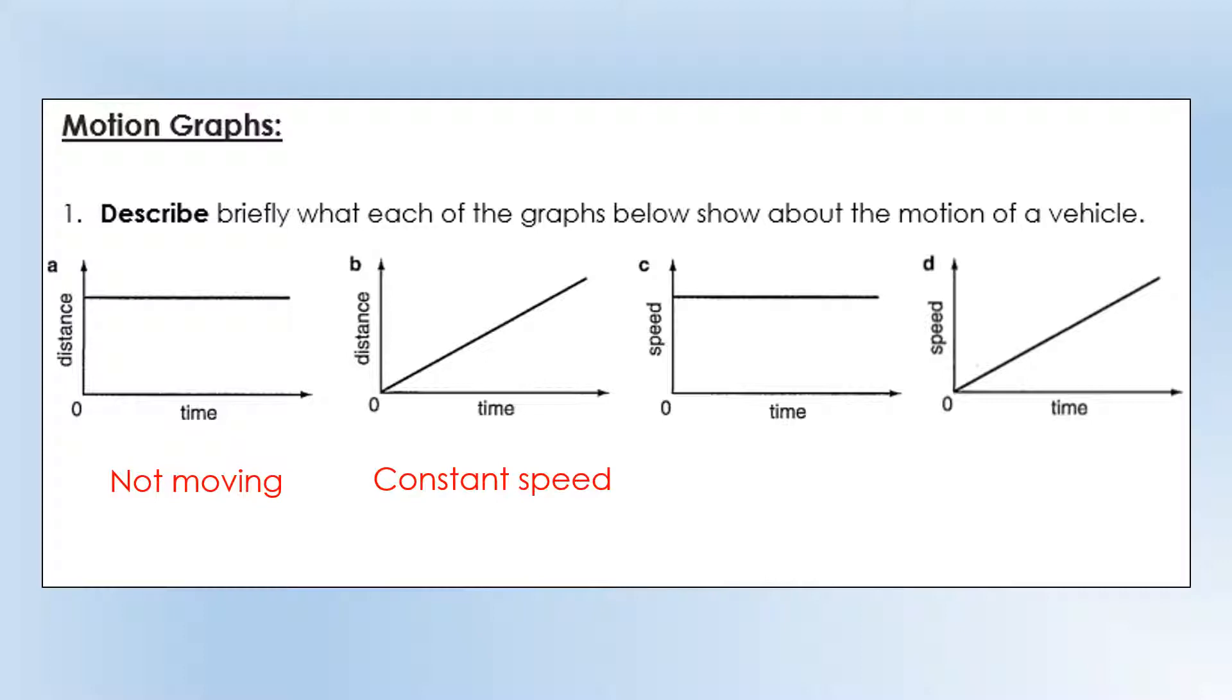Graph C, we can see the speed doesn't change with time, so that's traveling at constant speed. And D, we can see speed is increasing over time, it's a straight line graph, so it's experiencing constant acceleration.